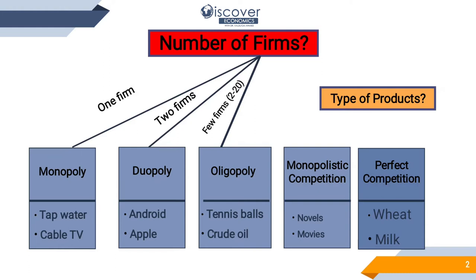These three types — monopoly, duopoly, and oligopoly — are the non-competitive types of market structure. Monopoly is when there is one single firm. Duopoly is when there are two firms supplying the market. Oligopoly happens when there are two to twenty firms. They might work together or might not, but there are two to twenty suppliers in the market.